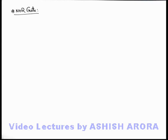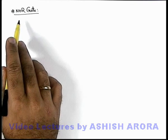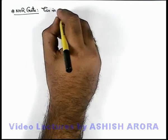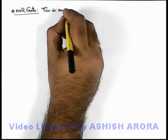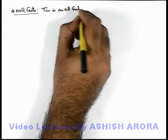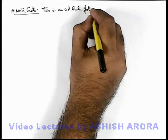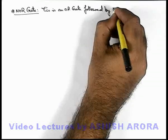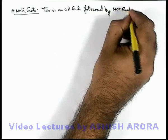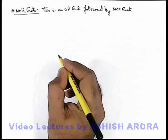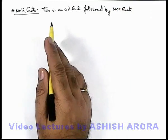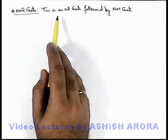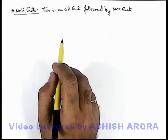Let us now study about the NOR gate. This is an OR gate followed by a NOT gate. Like an AND gate is an AND gate followed by a NOT gate, a NOR gate is an OR gate followed by a NOT gate.